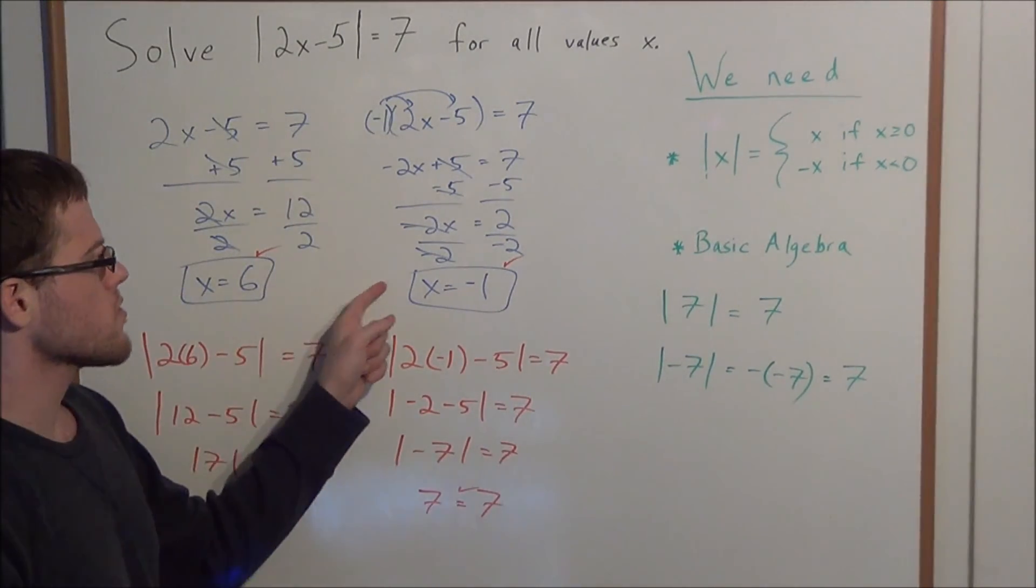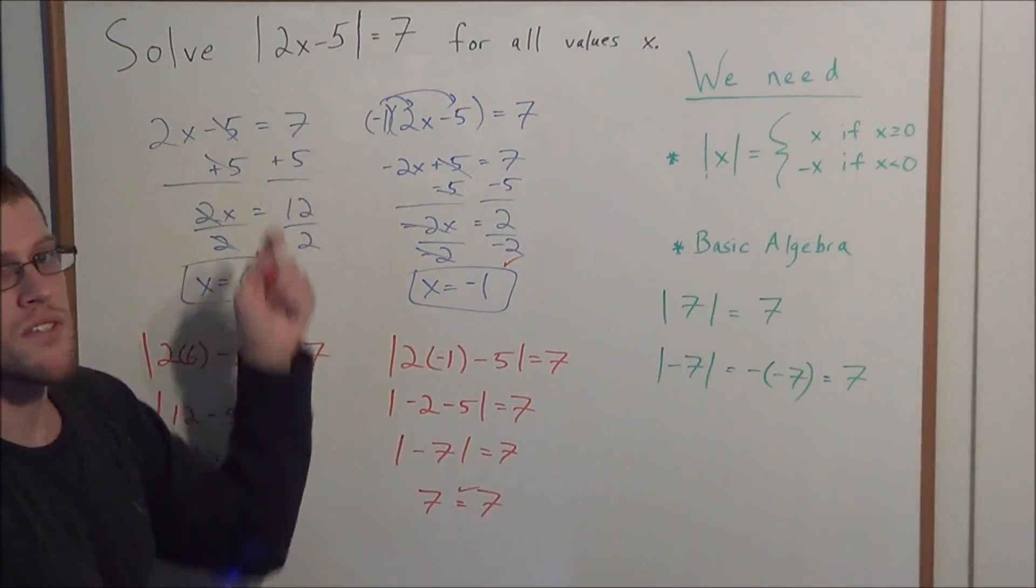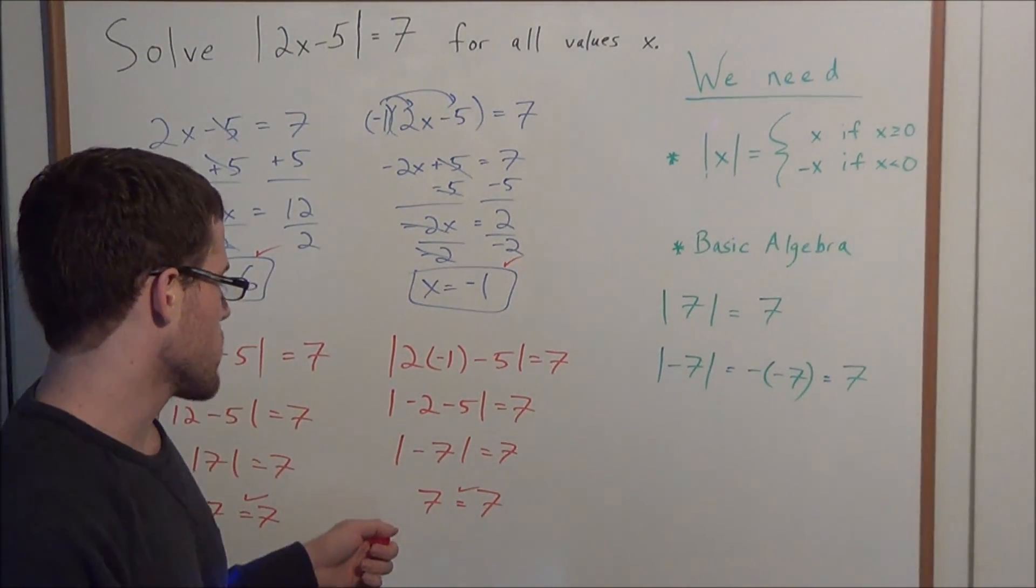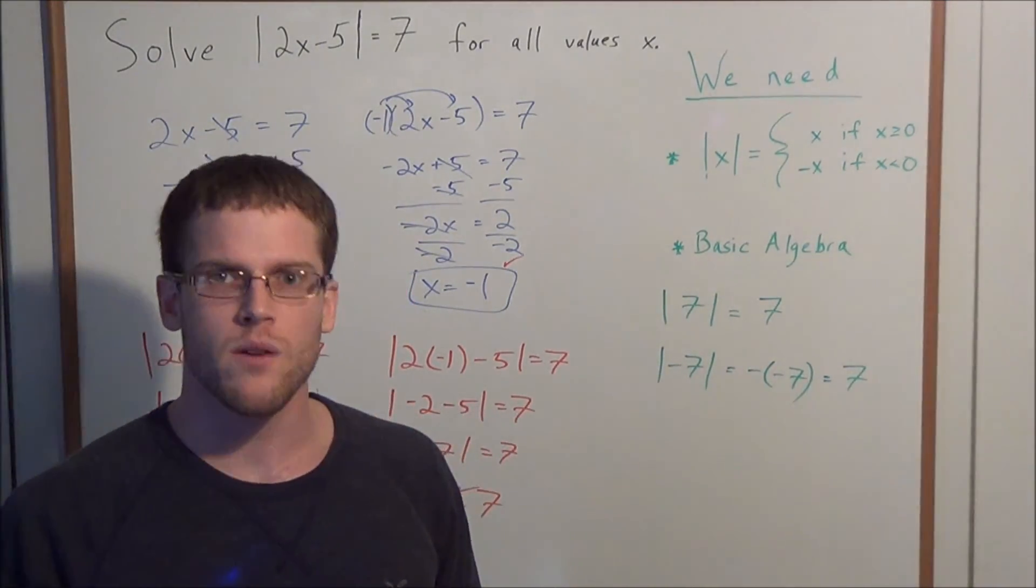So x equals 6 and x equals negative 1 are the two solutions to the problem: the absolute value of 2x minus 5 equals 7. Well, this is going to conclude this problem as well as this video. Thank you all for watching and I hope that it was helpful.